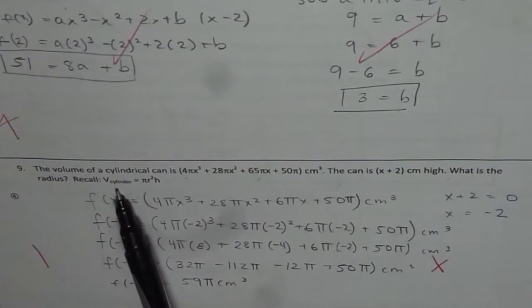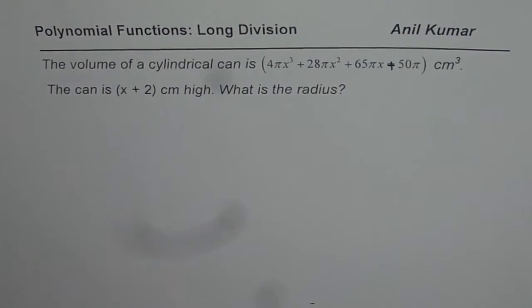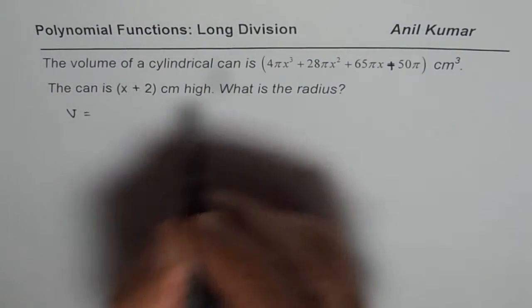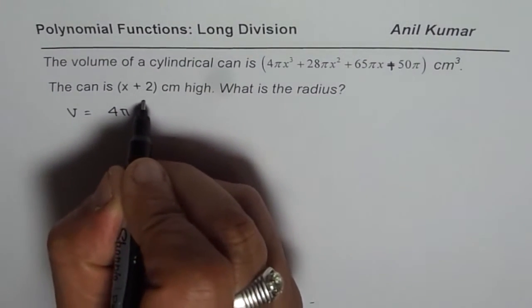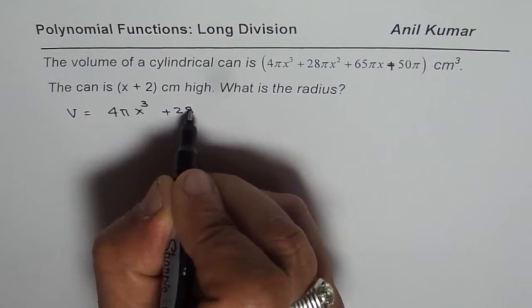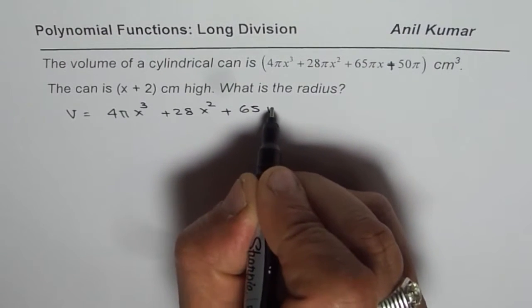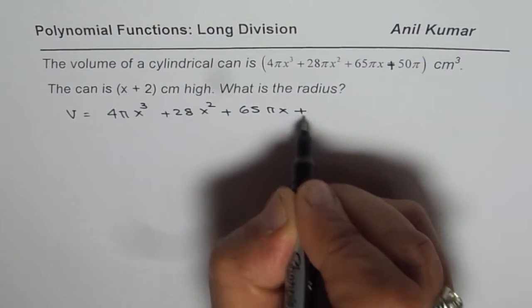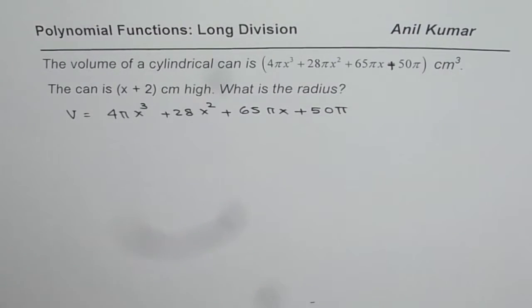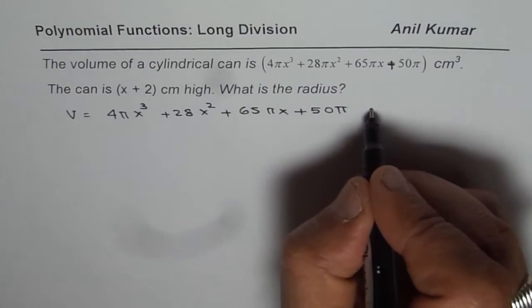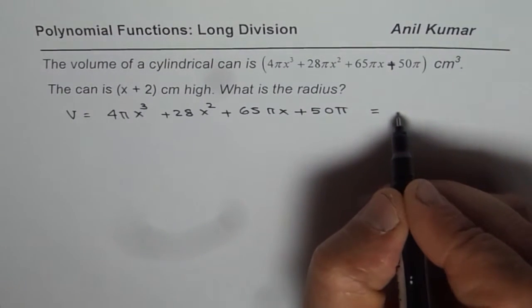Recall, volume of a cylinder, the formula is πr²h. Now let us see how to solve this question. So we are given the volume of the cylinder which we can write as 4πx³ + 28πx² + 65πx + 50π cm³. The formula for our cylinder is πr²h.